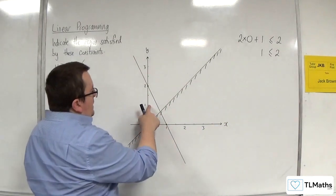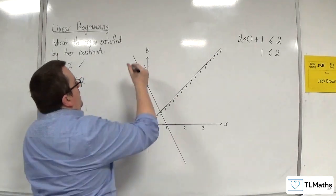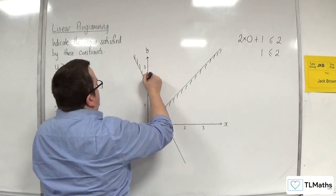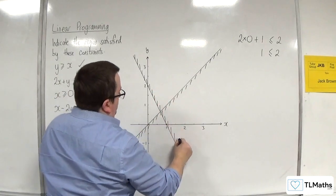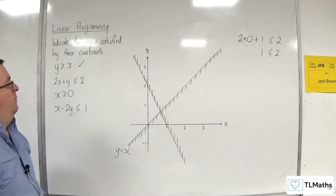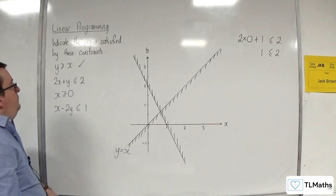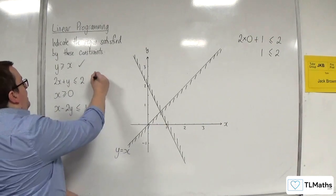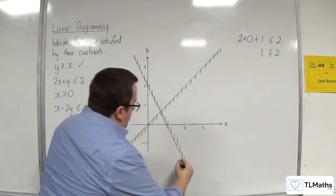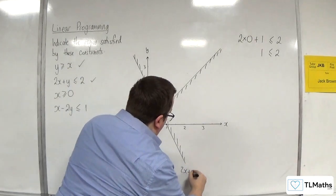So that point is in the region we want. So we want to shade the region we don't want. Like so. OK, so we've got that. And let's label it, shall we? 2x plus y equals 2.